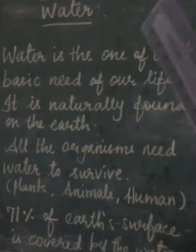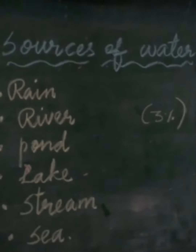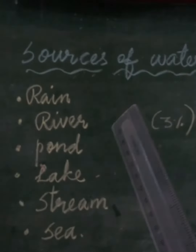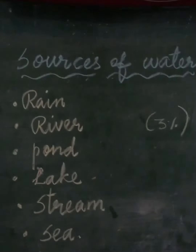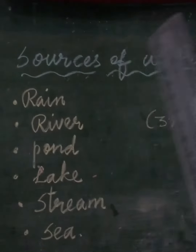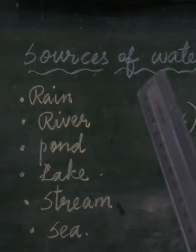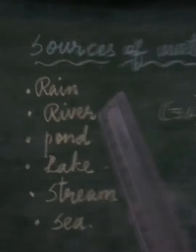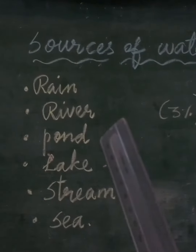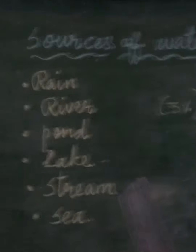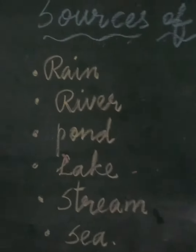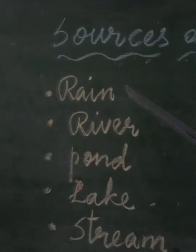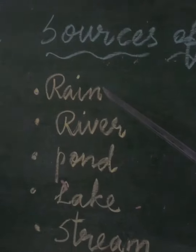We get water from various sources. Now let us discuss the sources of water. The main source of water is rain, and this rain water is found in rivers, ponds, lakes, streams, and the sea. So we get water from these sources.